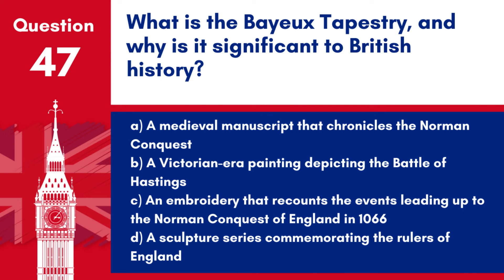Question 47. What is the Bayeux Tapestry and why is it significant to British history? a. A medieval manuscript that chronicles the Norman Conquest. b. A Victorian-era painting depicting the Battle of Hastings. c. An embroidery that recounts the events leading up to the Norman Conquest of England in 1066. d. A sculpture series commemorating the rulers of England. Answer: c. The Bayeux Tapestry is significant for its detailed depiction of the events leading to the Norman Conquest, providing valuable historical insights into this period.